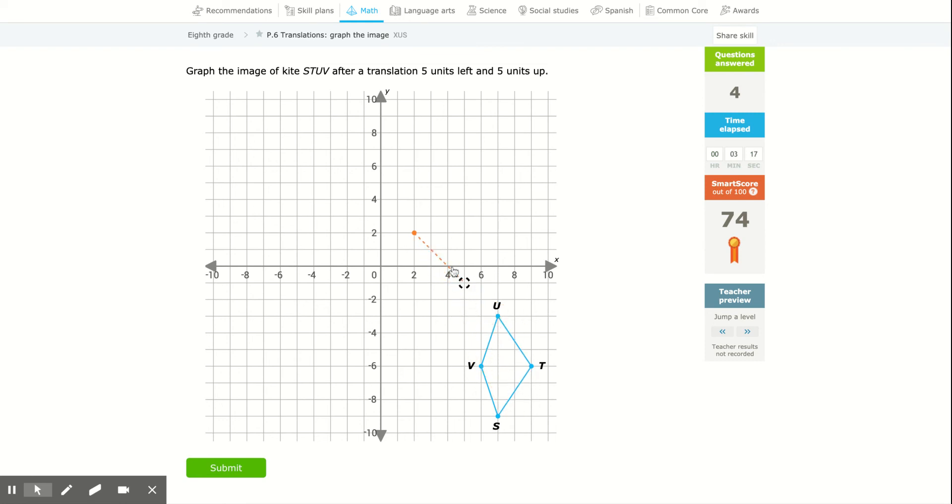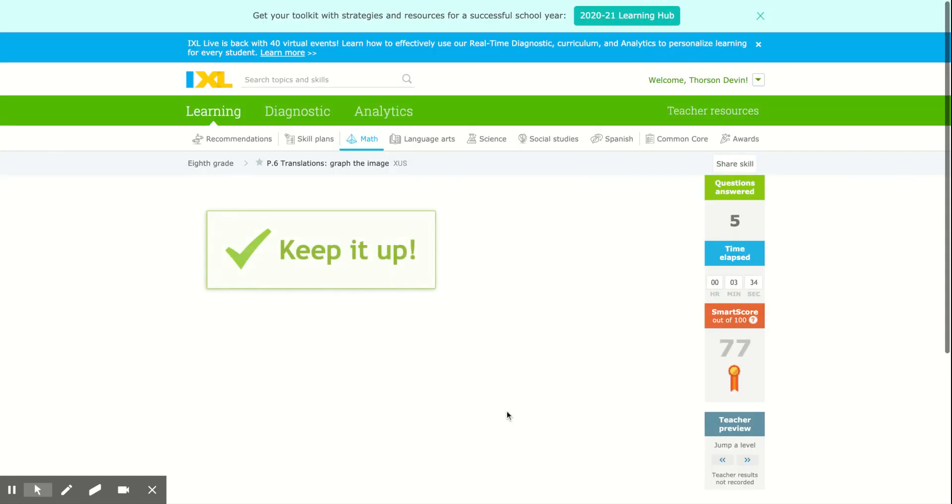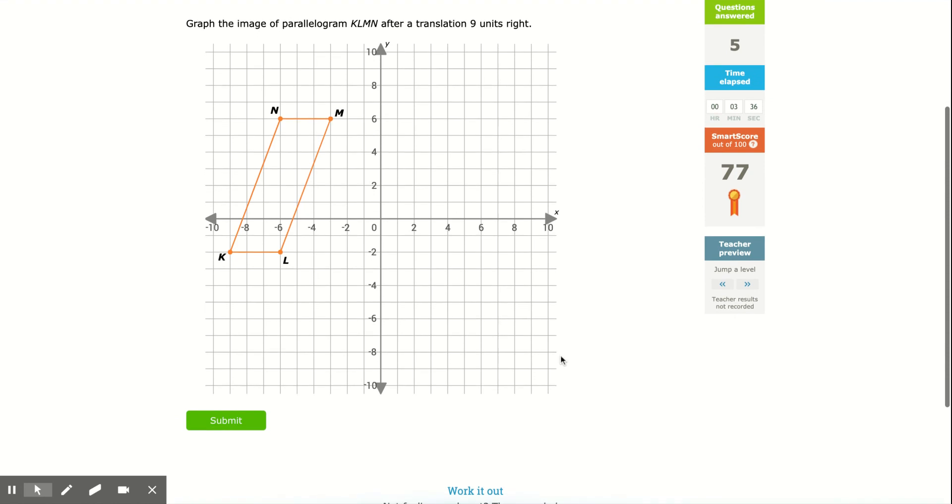If I know that this point here is U, then I notice that this one's just down 3 and over 1. This one's down 3 and over 1. This one's over 2 and up 3. And I have my figure. So sometimes, I actually use the figure itself to help me do it. Let's see if I did this one right. Yes! I did this one right.